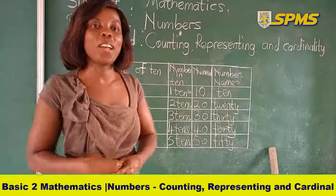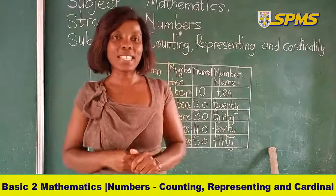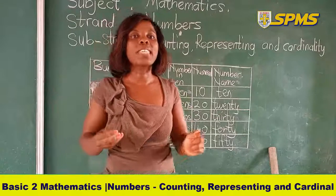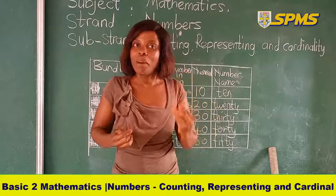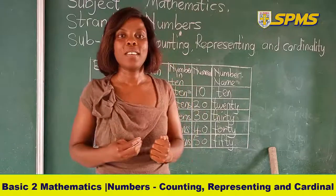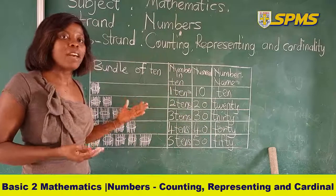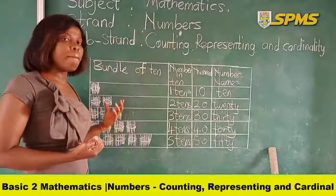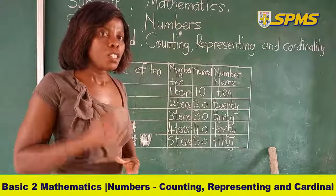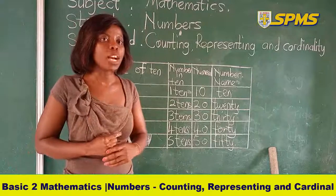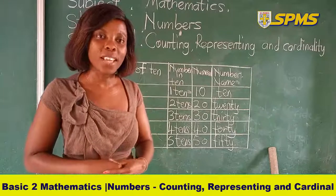Okay children, what have you learned today? Today we talked about numbers, and we tried to represent numbers from 1 to 20 using bundles and loose straws. We also drew the table of numbers in tens using bundles. Hope you can spell the number names very well — try practicing so you can be perfect at it. I'll see you another time. Until then, bye-bye.